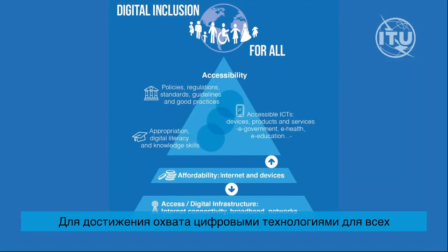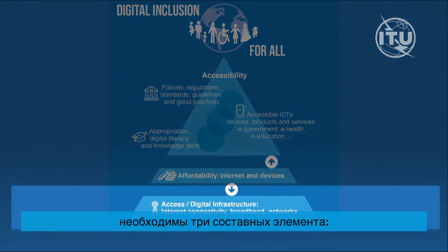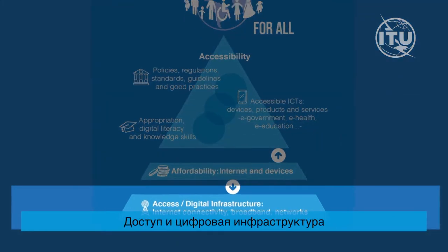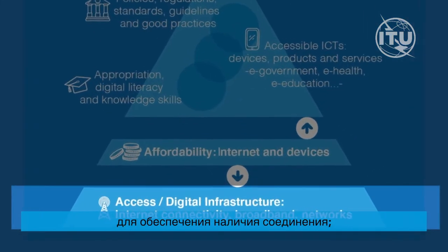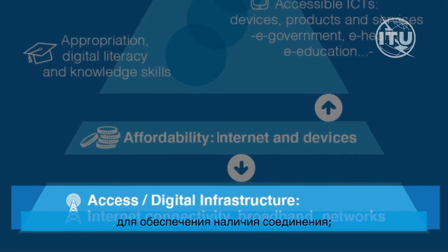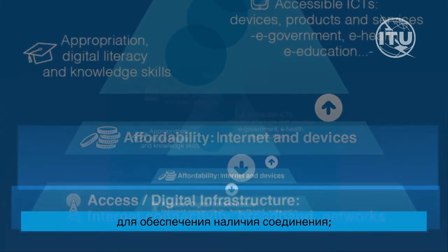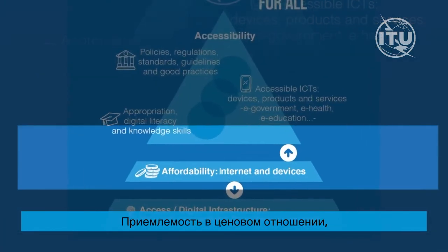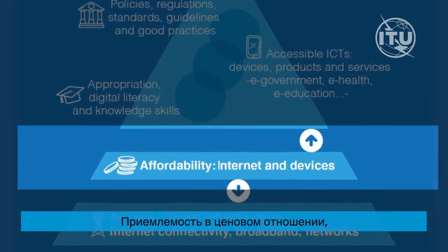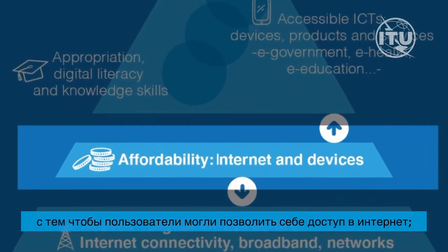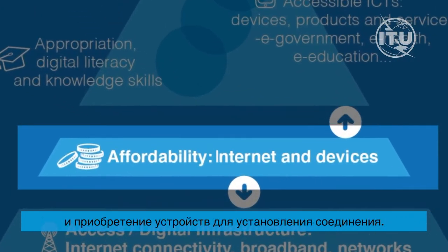Three building blocks are needed to achieve digital inclusion for all. First, access and digital infrastructure to ensure internet connectivity is in place. Second, affordability, so that users can afford internet access and buy devices to connect.